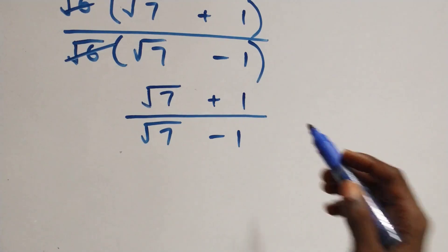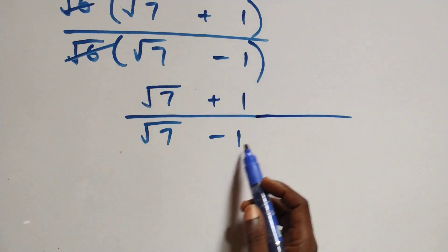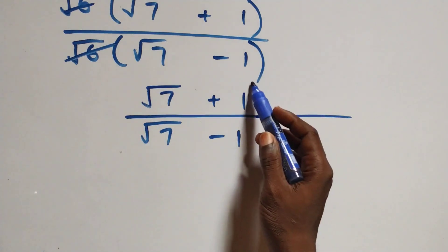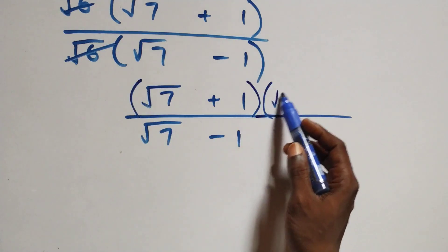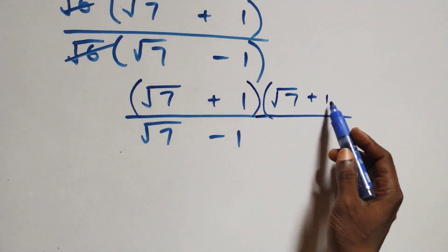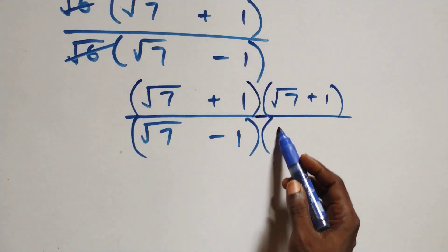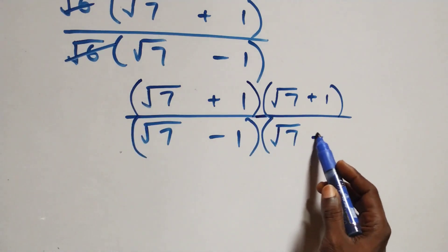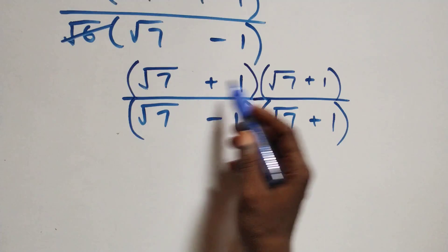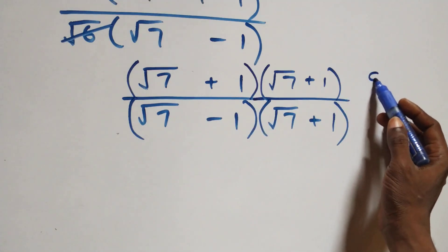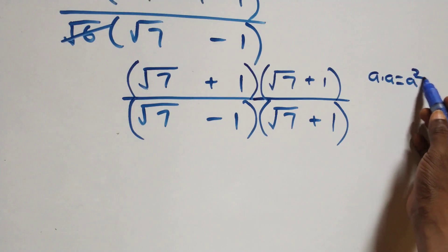We rationalize this expression by multiplying both the numerator and denominator by the conjugate of the denominator, which is (√7 + 1).